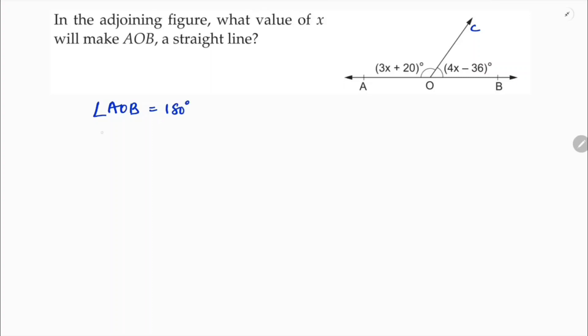Angle AOB is nothing but angle AOC plus angle BOC equals 180 degrees. So AOC is 3x plus 20 and BOC is 4x minus 36 equals 180 degrees.